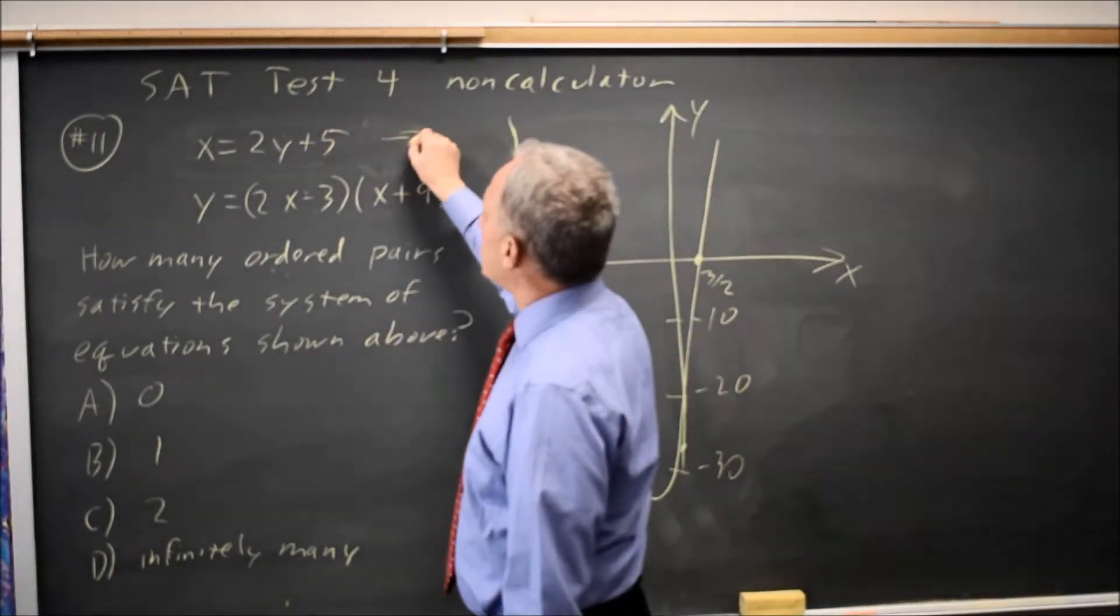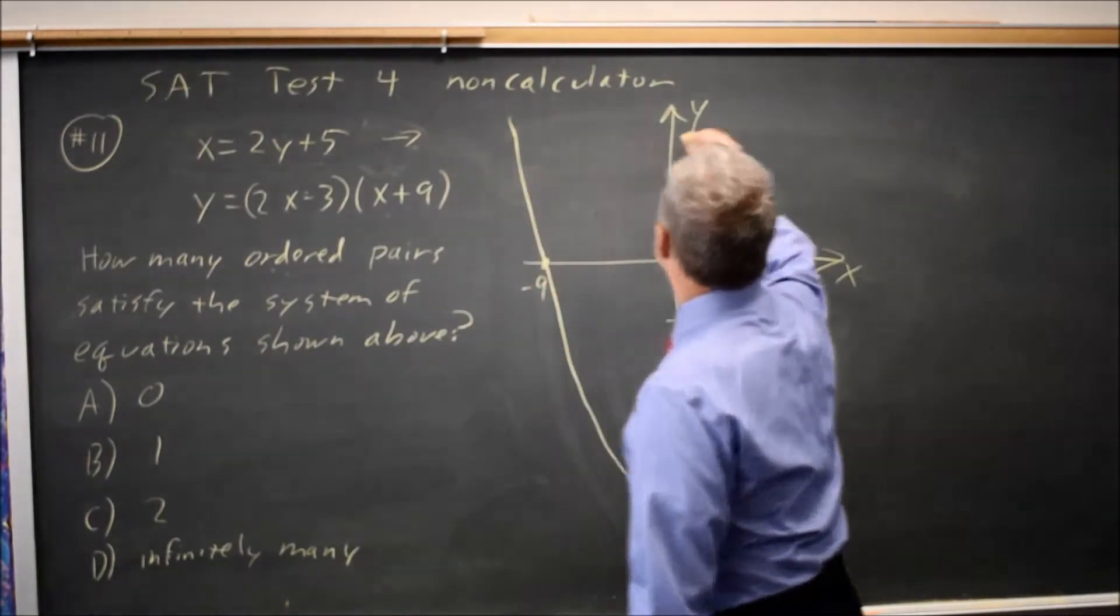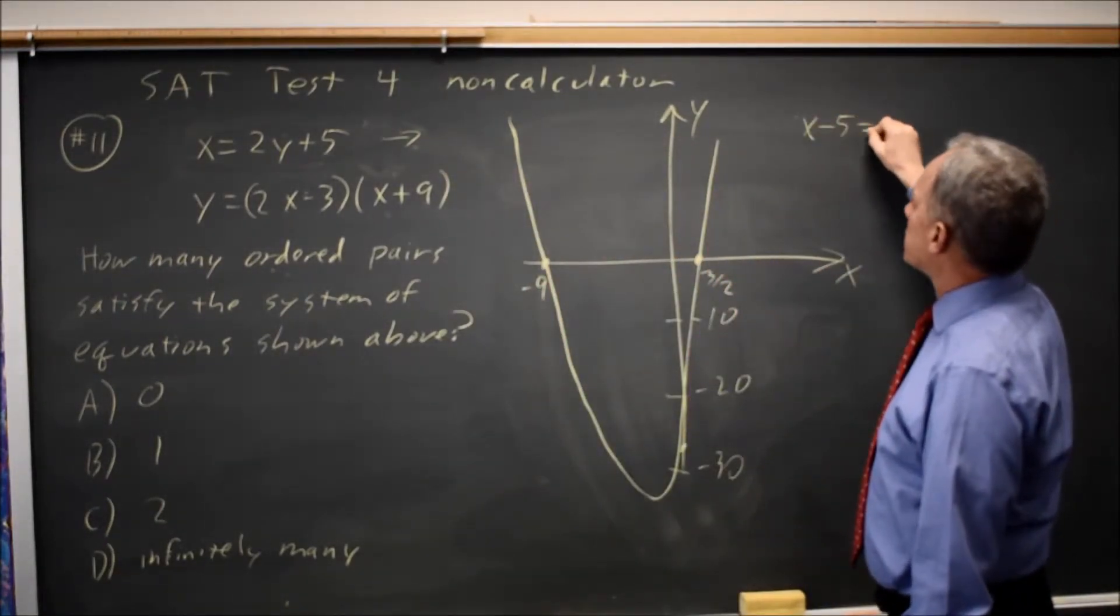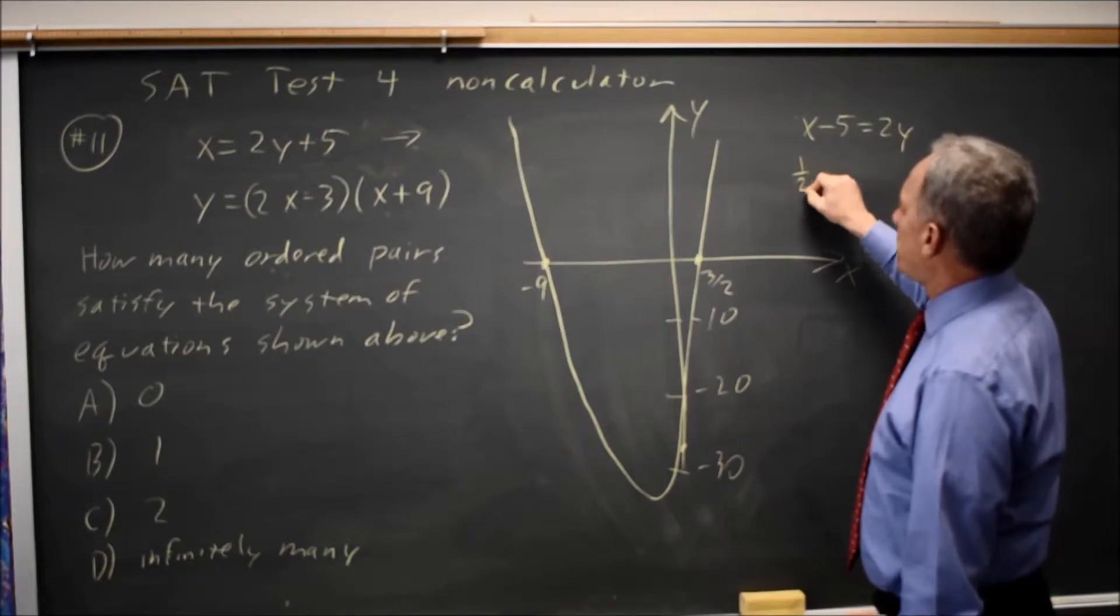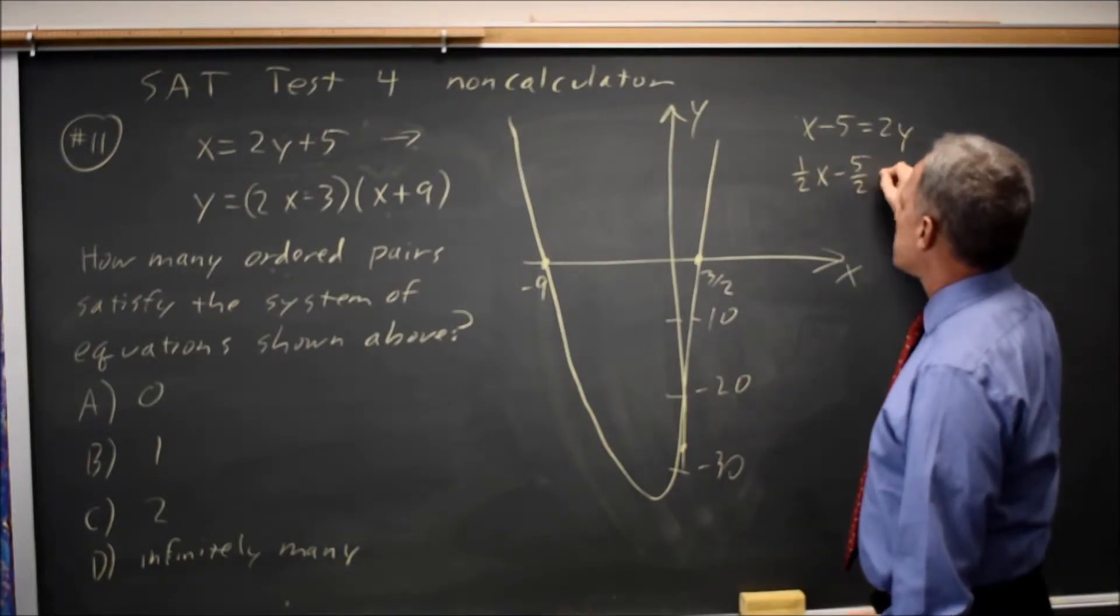Solving this equation for y, I get x minus 5 equals 2y, or 1 half x minus 5 equals y.